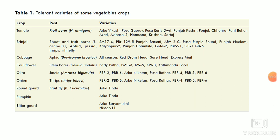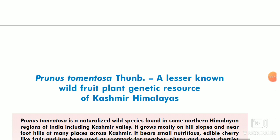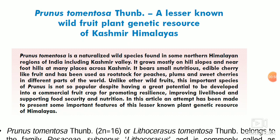Coming to the next, this is a list of tolerant varieties of some vegetable crops which are tolerant to different pests. In the case of tomato, fruit borer resistant varieties are Arka Vikas, Pusa Gaurav, and so on. In brinjal, cabbage, cauliflower, okra, and onion — for example, onion thrips resistant variety Arka Niketan. In pumpkin, Arka Tinda, and in bittergourd, Arka Surya Mukhi and Hisar 11 are resistant to fruit fly. Just revise and note these down from an exam point of view.